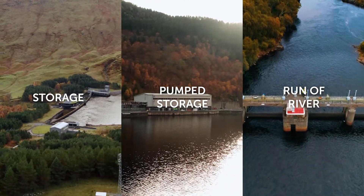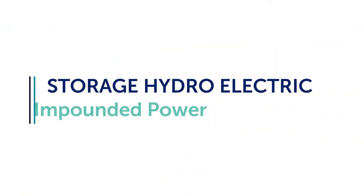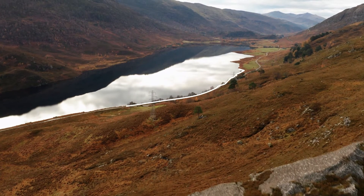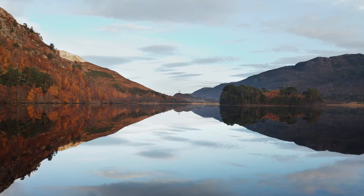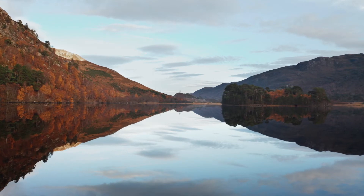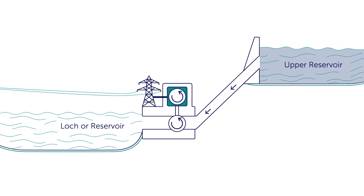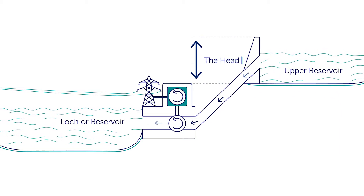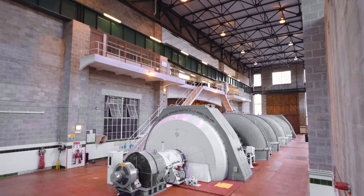At SSE Renewables we have power stations which generate power using all three of these, though the vast majority of our power stations are storage. We start therefore with storage hydroelectric, sometimes known as impounded power. With this type of hydro, a natural loch or man-made reservoir formed by damming a river collects water draining from the surrounding area, which can be hundreds or even thousands of square kilometres in size. What is created is a store of water situated at a higher altitude than the power station it supplies. The difference in height between the power station and the reservoir is called the head.